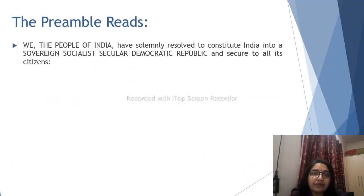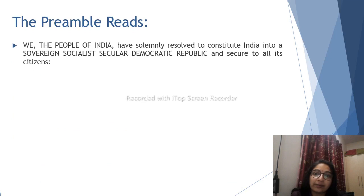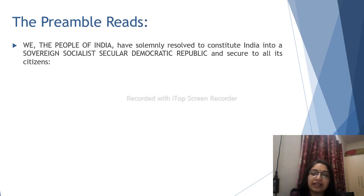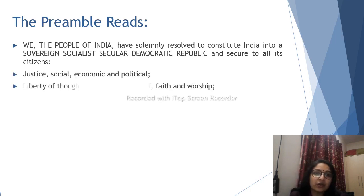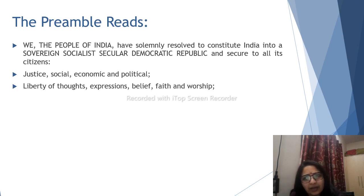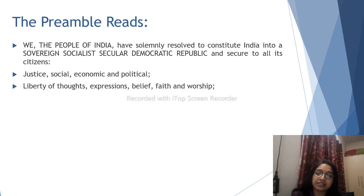The Preamble reads: 'We, the people of India, have solemnly resolved to constitute India into a Sovereign, Socialist, Secular, Democratic Republic and secure to all its citizens.' The phrase 'We the people of India' represents unity — we follow different religions and have different cultures, but we are all Indians. Justice — social, economic and political. Liberty of thought, expression, belief, faith and worship.